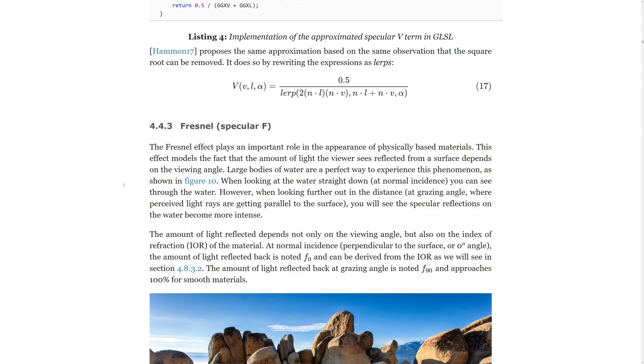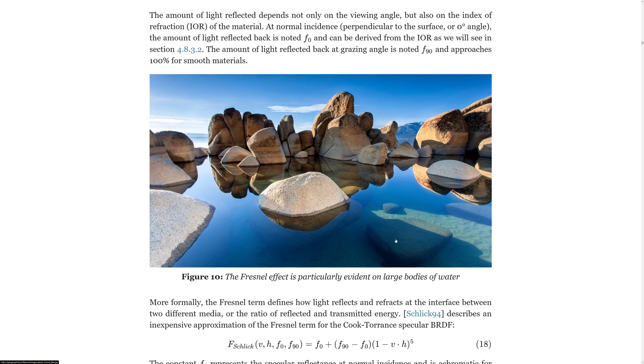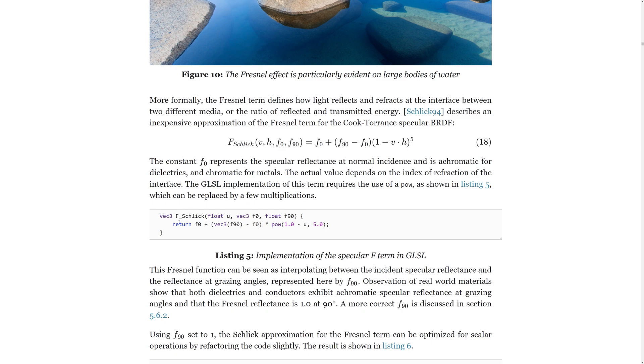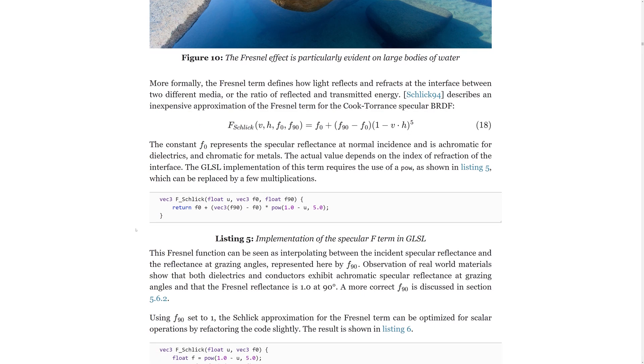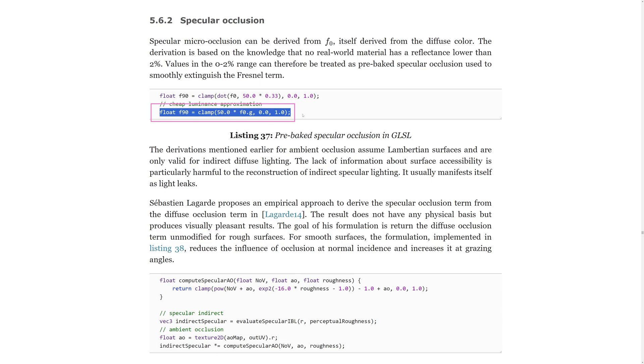The final equation is the Fresnel term, which causes the reflection to increase at grazing viewing angles. A typical example of this is a pool of water where the floor becomes less visible the more inclined the viewing angle gets from the surface normal. We use the Schlick approximation for this, where F0 is the specular color at 0 degrees from the normal and F90 is the specular color at 90 degrees or parallel to the surface. We can approximate this value by setting it to 1. However, we can also approximate it like this, which is what we are going to use.